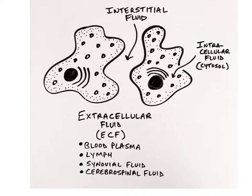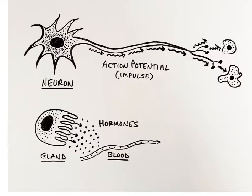When conditions change in either the external or internal environment, the nervous system and the endocrine system are the two systems that frequently respond to and correct the change in order to return the condition back within the normal range. Regulation is performed very quickly, usually in milliseconds, by neurons in the nervous system through the generation of electrical signals called nerve impulses, also called action potentials, that are sent to organs that bring the condition back to normal.